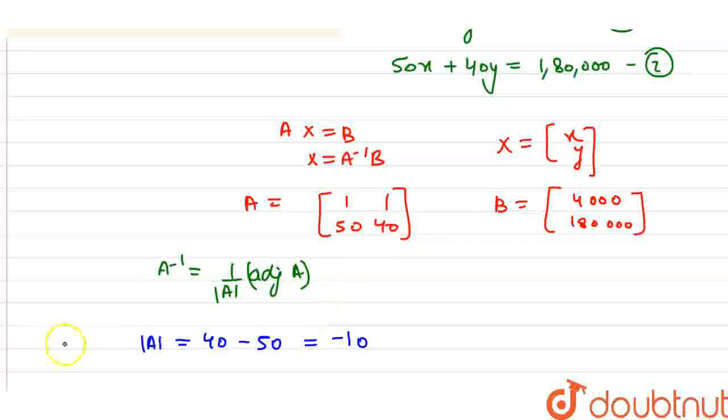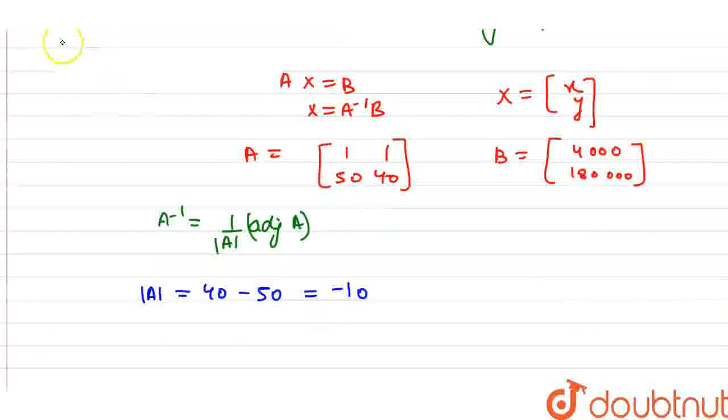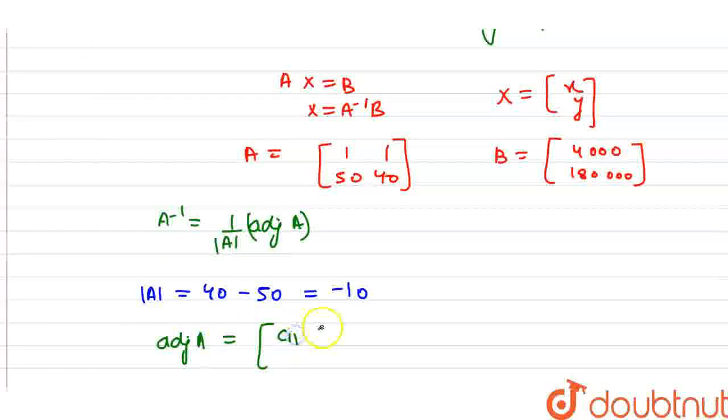Now we calculate the adjoint matrix. The adjoint matrix equals the transpose of the cofactor matrix, which is [C11, C12; C21, C22].